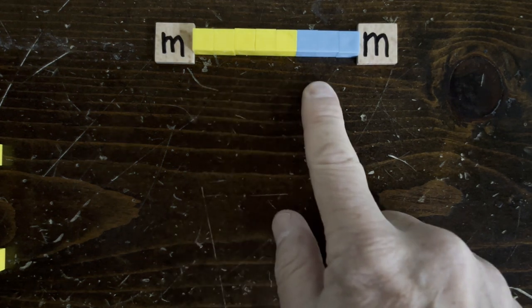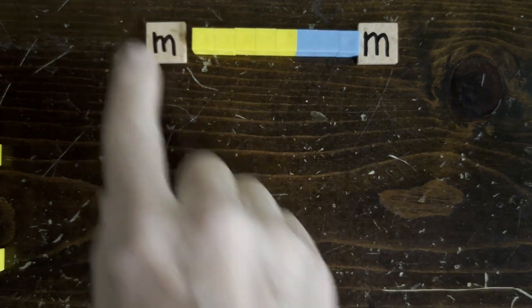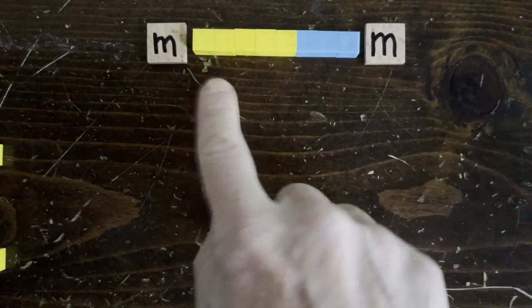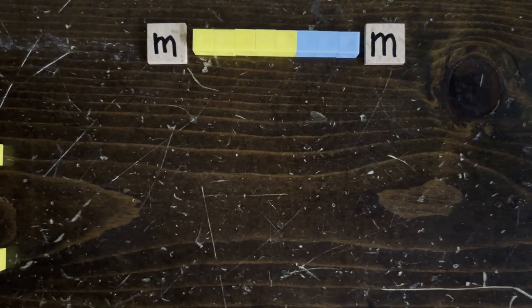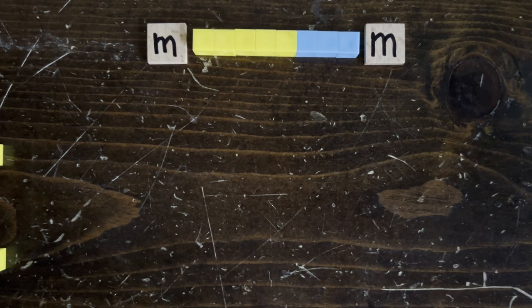If we're looking for a counterexample to the 3n plus 1 conjecture, we can hypothesize some sequence of up and down moves, and then solve for the m that if you start with m, you wind up looping back to m. And if m's an integer, then we found a counterexample, a 3n plus 1 loop full of integers. Or we can try to show that m is never going to be an integer for any sequence.